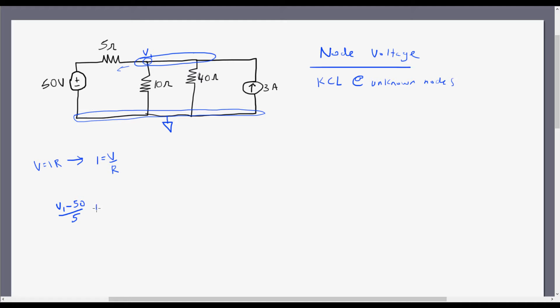I'm going to add that to the current leaving the other branch, which is just going to be V1 minus 0, because for ground I know V equals 0. Over 10 ohms. I'm going to add that to the current leaving this branch here, which is going to be V1 minus 0 again, over 40 ohms.